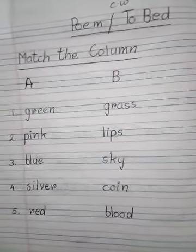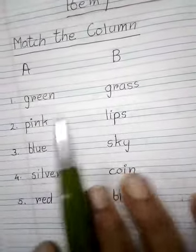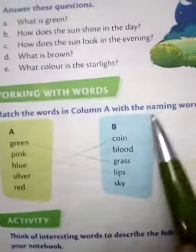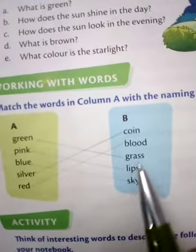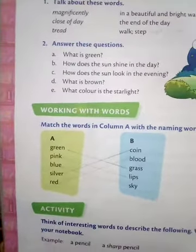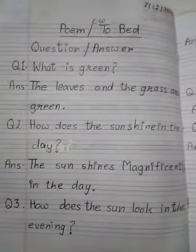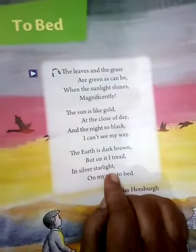Children, you always write — match the column in front of the correct word, or you match it with the help of a line. Okay children, these are your tasks. Do this work in your notebook and your book with good writing. I hope you understand this poem. You also learn the poem 'To Bed'. Okay children, now bye.